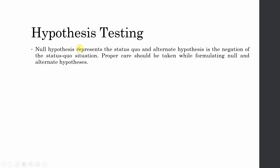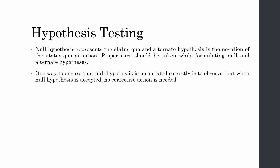The null hypothesis represents the status quo, and the alternate hypothesis is the negation of the status quo situation. Proper care should be taken while formulating your null and alternate hypothesis. One way to ensure the null hypothesis is correctly formulated is to observe that when it is accepted, no corrective action is needed. If your null hypothesis is accepted, the claim of the electric bulb manufacturer stands true — no corrective action is required.